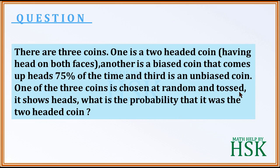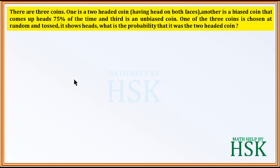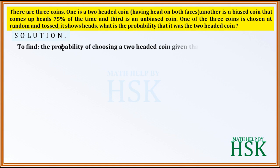One of the three coins is chosen at random and tossed, and it shows head. What is the probability that it was the two-headed coin? We have to find the probability of choosing a two-headed coin given that the coin shows head.